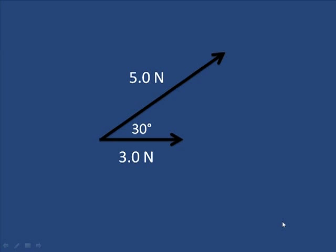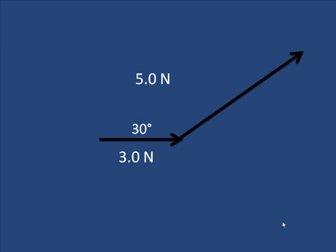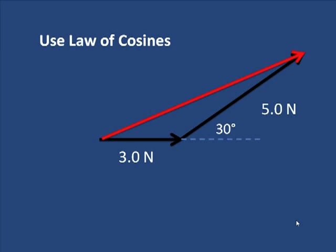Now let's add two vectors that don't make right angles. Again, you do them head to tail and label them as such. We're adding a 3 newton and a 5 newton, and we need to use the law of cosines to find this resultant. So let's see how we would do that.